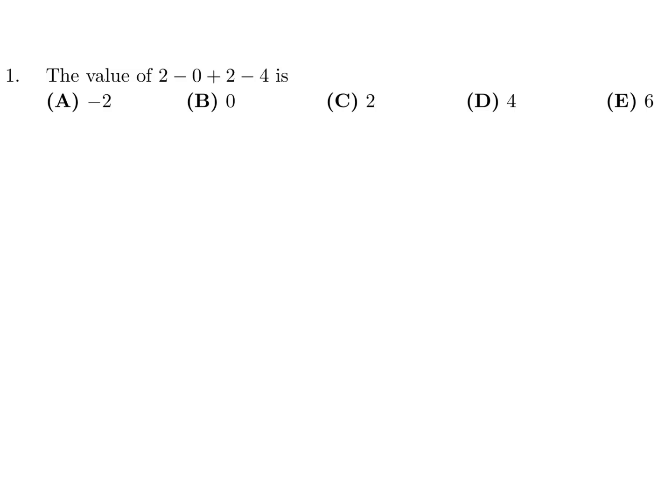The value of 2 minus 0 plus 2 minus 4. Well, 2 minus 0 is 2, 2 minus 4 is minus 2, and 2 minus 2 is 0. So the answer here is B.